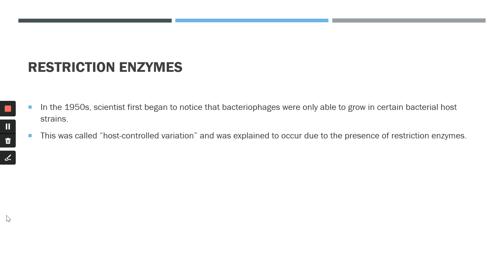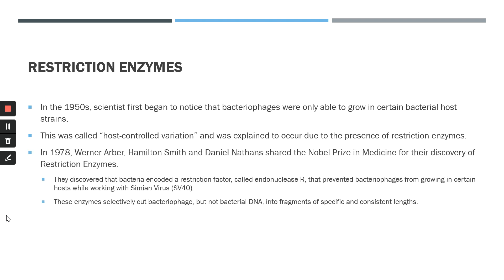Restriction enzymes were first discovered in the 1950s when scientists noticed that bacteriophages — viruses that affect bacteria — were only able to grow in certain bacterial host strains. This was called host-controlled variation, and it was explained by the presence of restriction enzymes. In 1978, Werner Arber, Hamilton Smith, and Daniel Nathans won the Nobel Prize in medicine for their discovery of restriction enzymes.